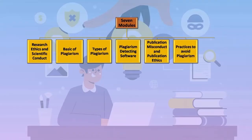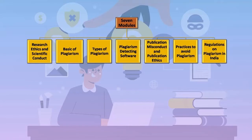We will then discuss publication misconduct and publication ethics, followed by practices you can adopt to avoid plagiarism. We will also discuss different regulations proposed by UGC and other bodies and universities to avoid plagiarism in India. In the fourth week, there will be no reading module — instead, there will be an activity or assignment which you need to complete and submit.